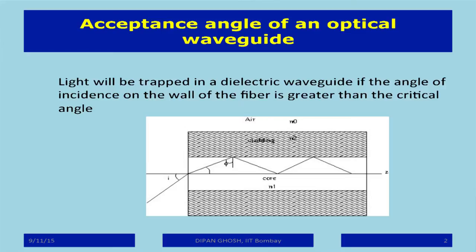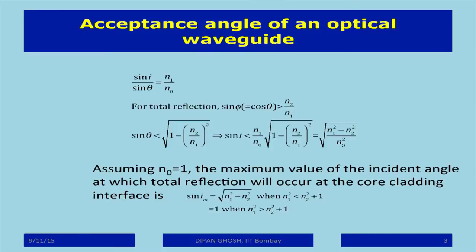The point is that there is a maximum value of the incident angle for which total internal reflection will take place. Internal reflection is the primary thing we worked out this morning. So this is essentially sine i over sine r equal to n1 over n0. For total internal reflection the angle of incidence at the interface between the core and cladding must be greater than n2 over n1, so sine phi should be greater than n2 over n1.